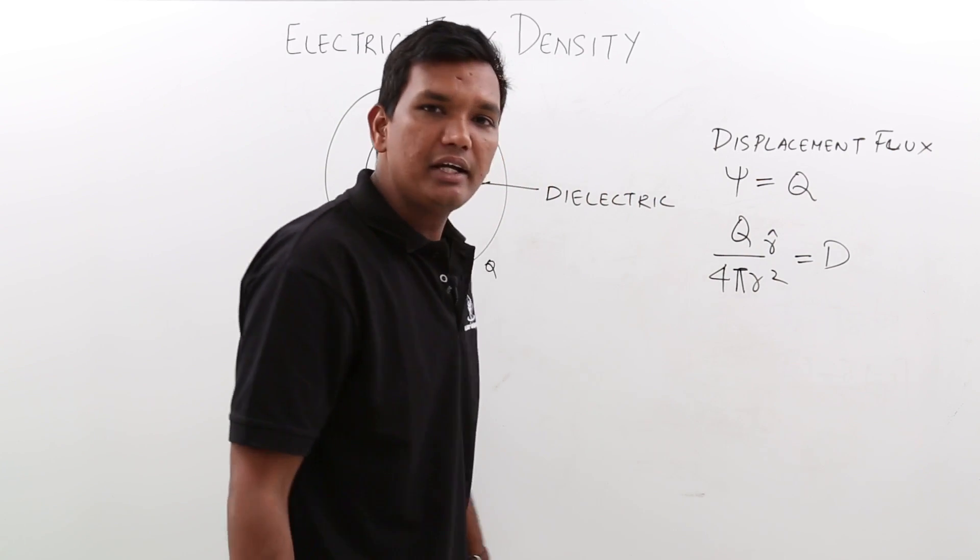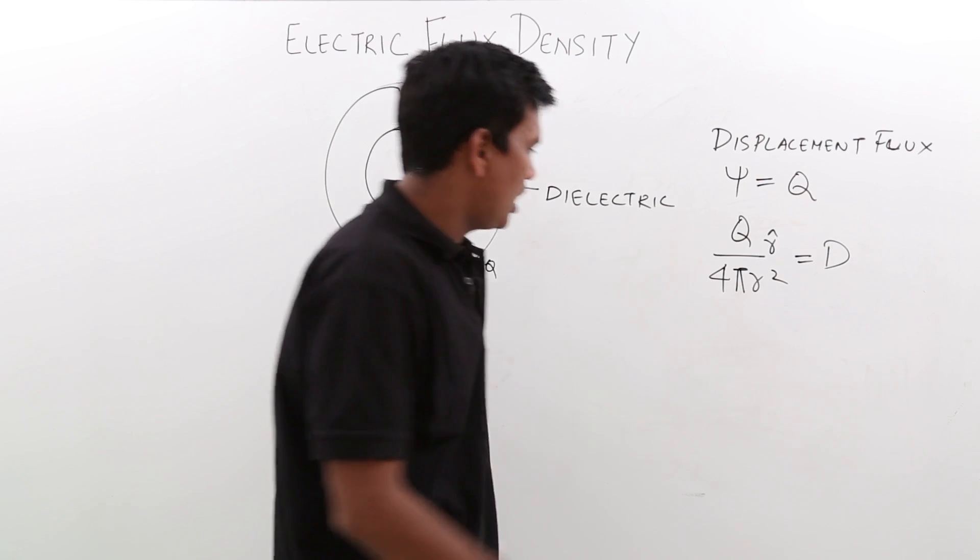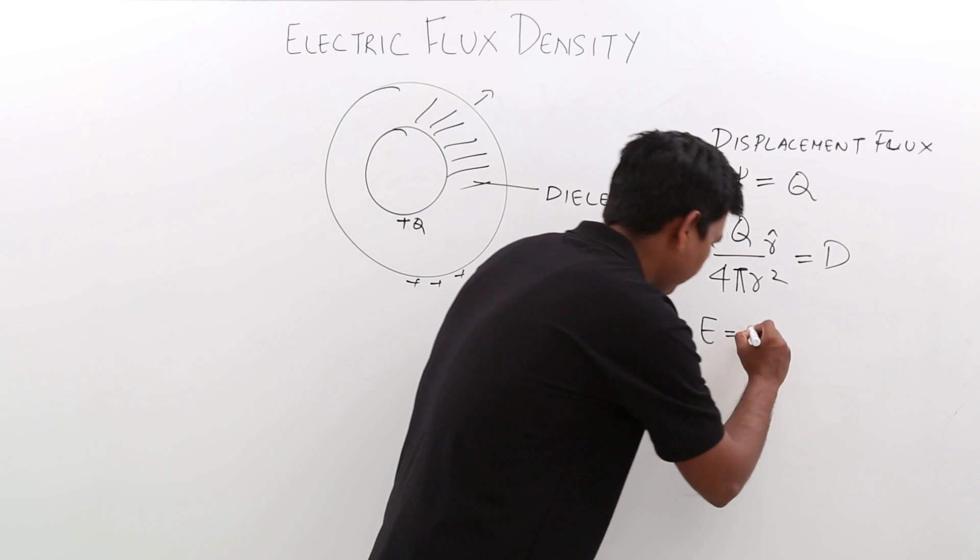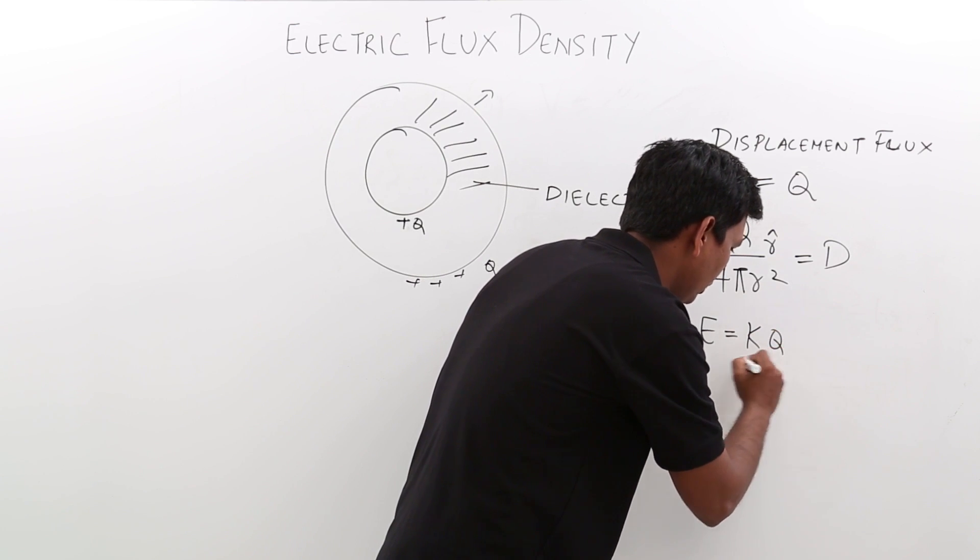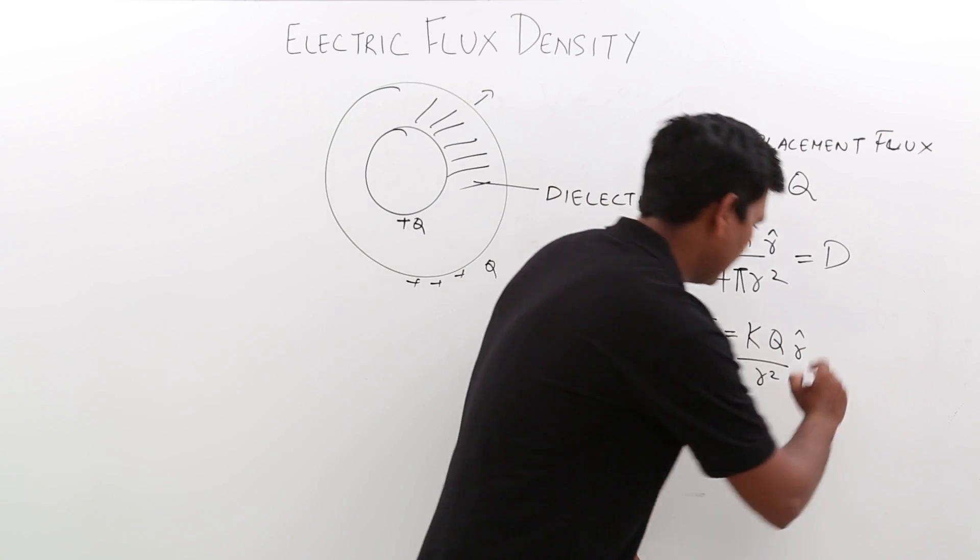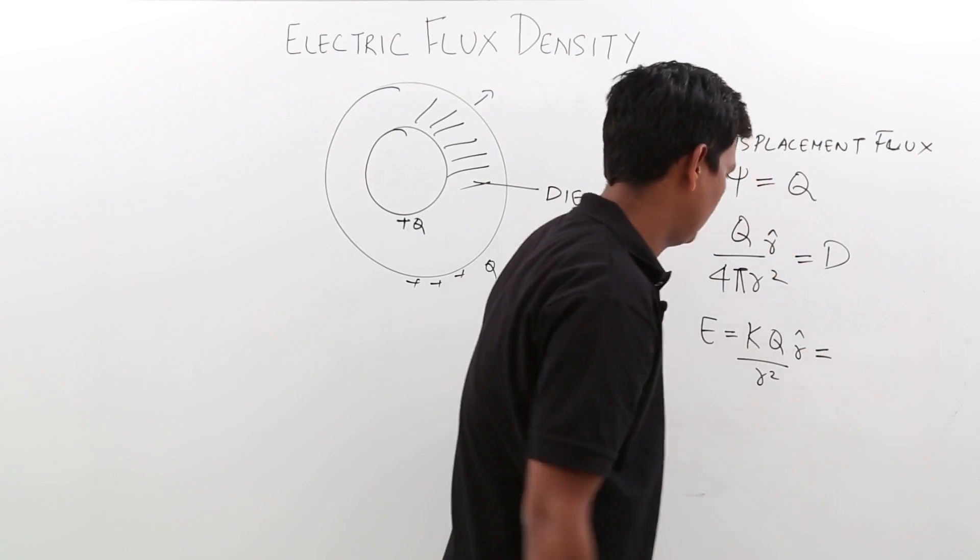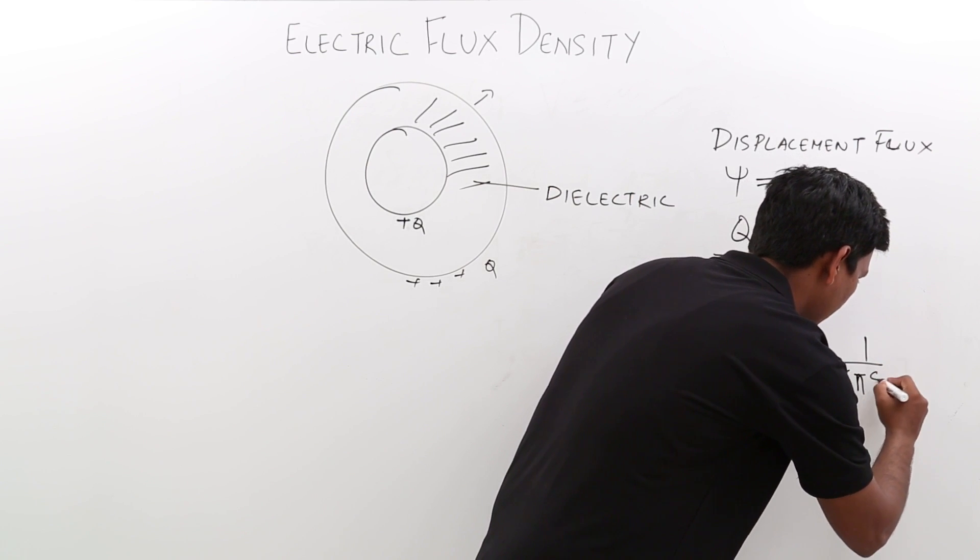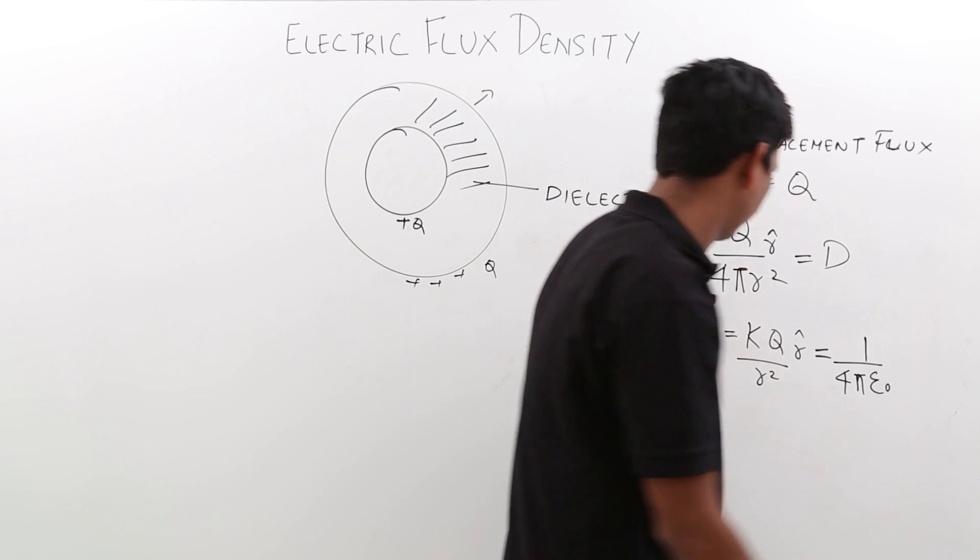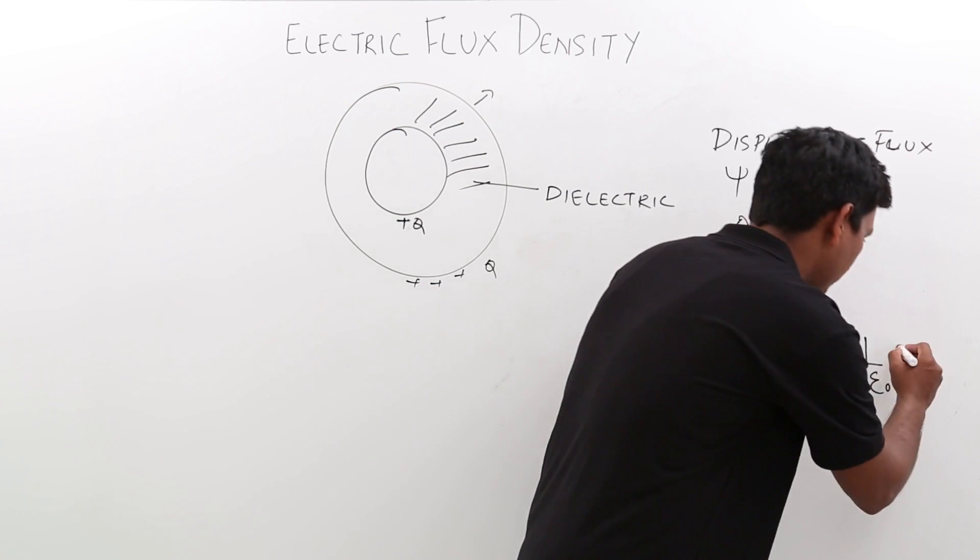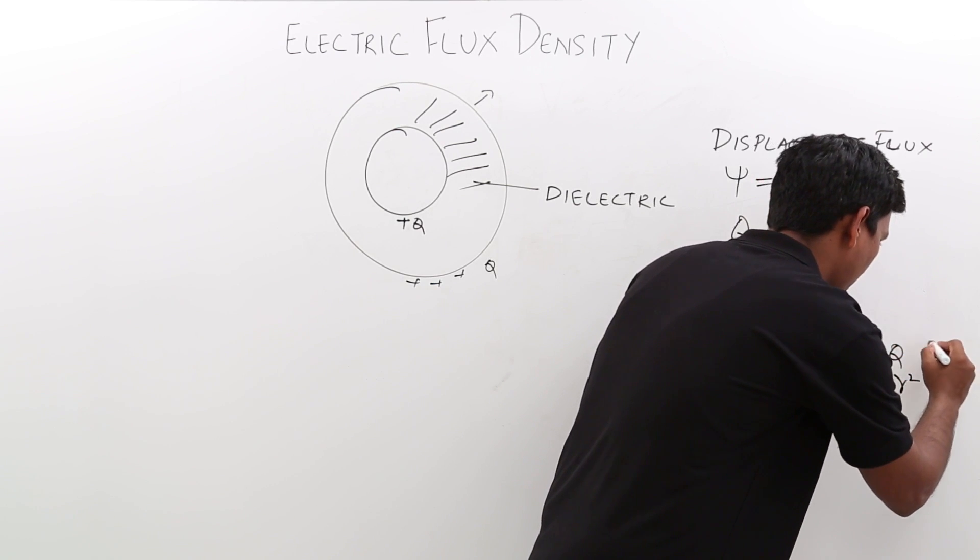If you compare to the previous classes, the electric field is E = kq/r²r̂. If I substitute the values, k is 1/(4πε₀), so E = q/(4πε₀r²)r̂.